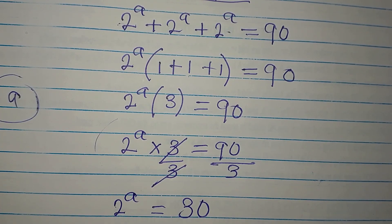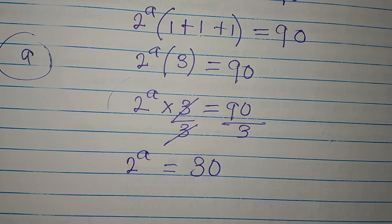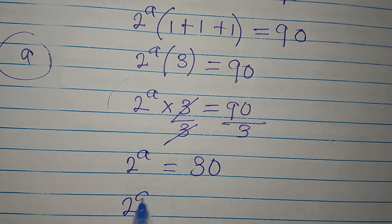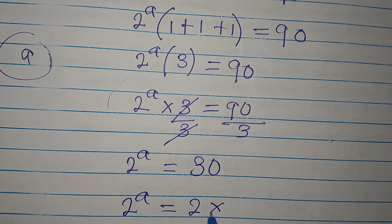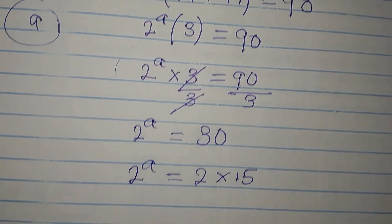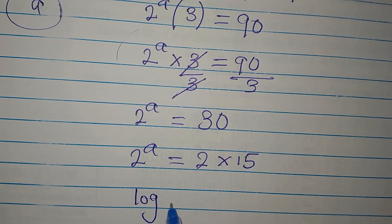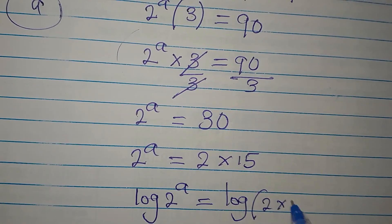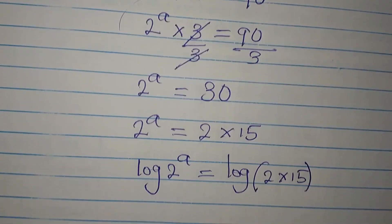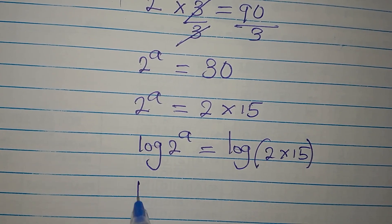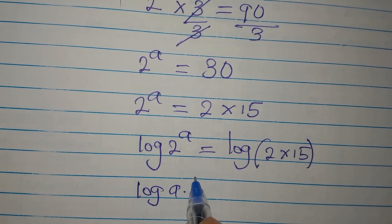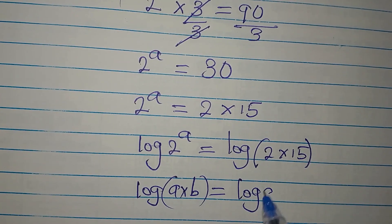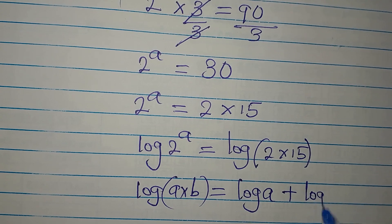Now we take the log of both sides. We can first simplify 30 as 2 multiplied by 15. Then: log of 2 to the power of a equals log of 2 times 15. We apply the product rule: log(a × b) equals log a plus log b.